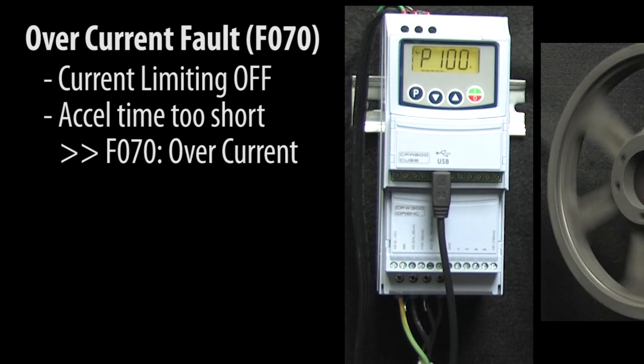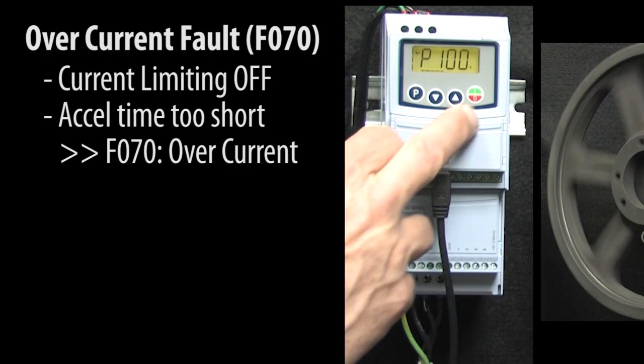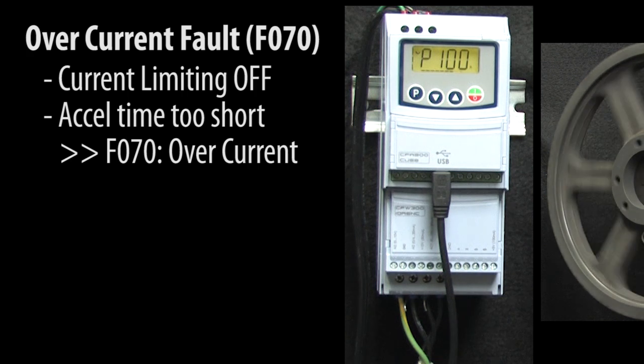So if you are getting an overcurrent fault under load, make sure the current limiting threshold is set to an appropriate value and the acceleration time is reasonable.